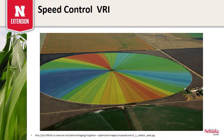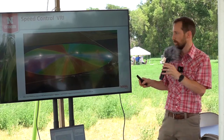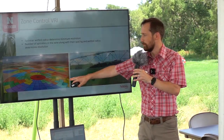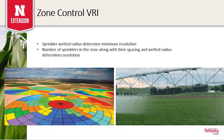With speed control, these are the pie-shaped slices — you can set the number of degrees around the circle that you want, going from the outer edge all the way to the pivot point. With zone control, depending on the number of zones — whether each individual span or down to the individual sprinkler level — we can get more of a grid shape and a much more precise prescription map that we can send to the machine.